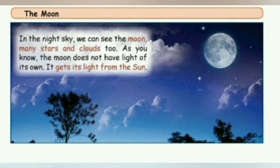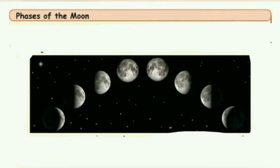The moon does not have light of its own. It gets the light from the sun and reflects it during the night time. The faces of the moon — we look at the sky every night, but does the moon look the same every night? No, the shape of the moon varies every night.